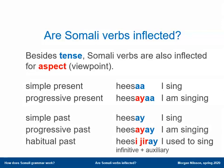We can do the same in the past. There is a simple past — hesa — and to make it progressive past we add an -a, resulting in hesa ('I was singing'). In the past tense Somali actually has three aspects, including a habitual past 'I used to sing', which is expressed with the auxiliary verb jirei. The preceding main verb again takes the infinitive form, so 'I used to sing' is hesi jirei.